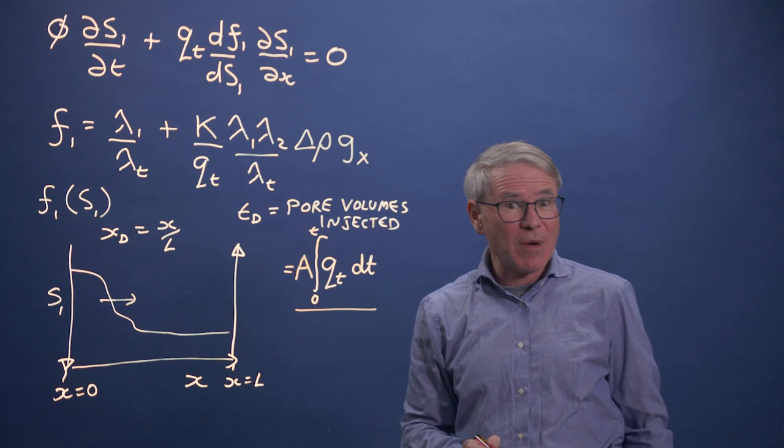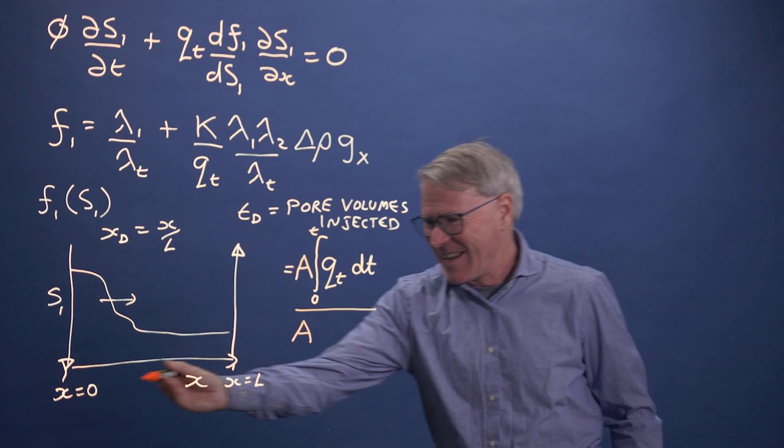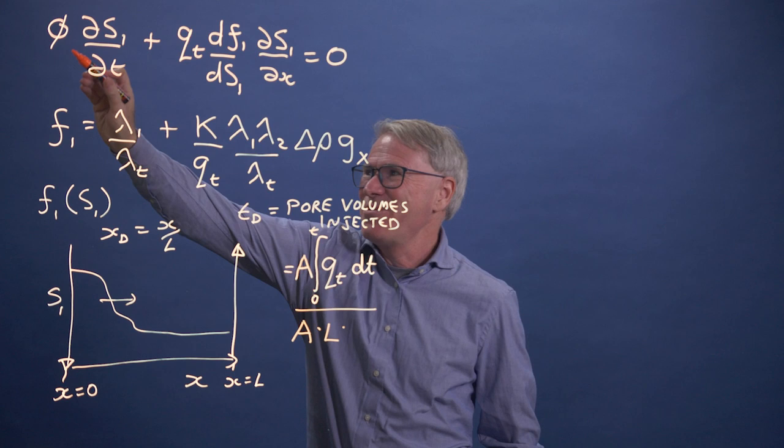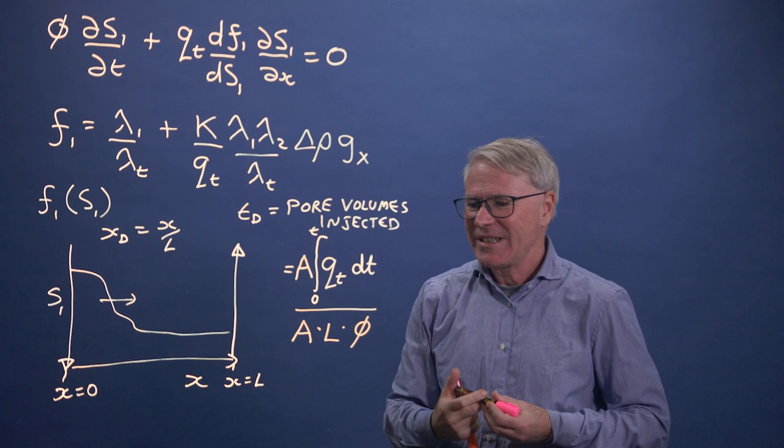If it's the number of pore volumes, it's the volume injected divided by the pore volume of the reservoir. It has a cross-sectional area A out of the board, a length L, and we're in a porous medium with porosity φ. So the A's cancel.